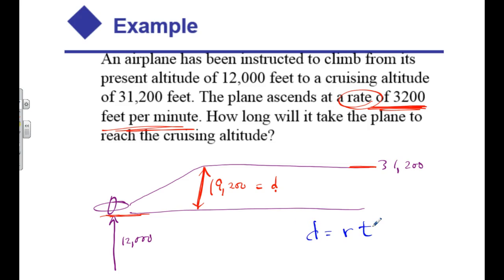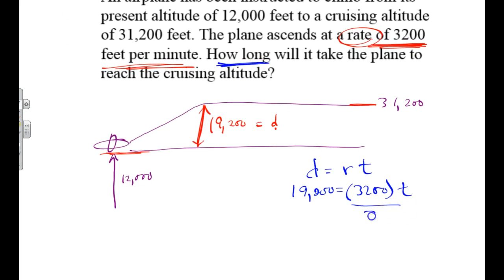And I'm just going to plug some numbers in. They gave me the distance of 19,200. They gave me the rate of 3,200. And they said, how long? Find the time. And I can do that by dividing everything through by 3,200.